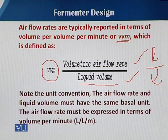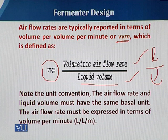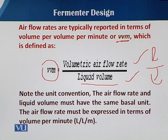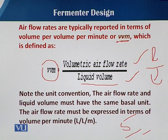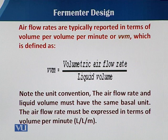For example, if we supply 5 liters of air to 5 liters of medium in 1 minute, then the air flow will be 5 over 5, which equals 1 — that is 1 VVM. By this way we can calculate the flow rate in fermentation medium.